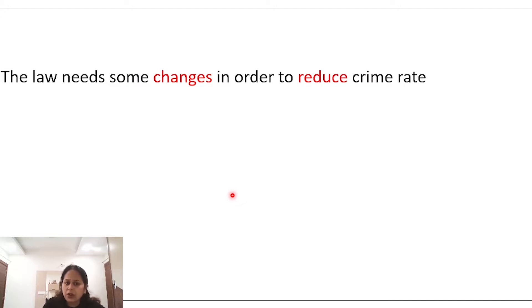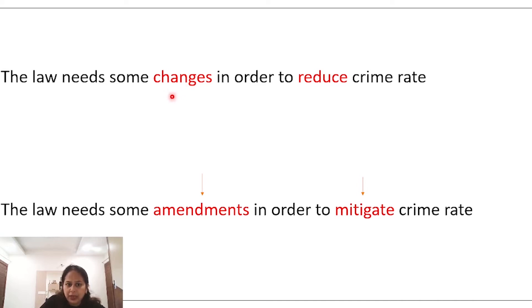The law needs some changes. Law mein kuch changes ki zarurat hai taaki crime ko reduce kiya jaye. To ab iski jagah kya sentence use kar sakte hain? The law needs some amendments. Changes ki jagah humne use kiya amendments, reduce karne ke liye humne use kiya mitigate. Changes ki jagah amendments use kar sakte hain, reduce ki jagah mitigate.